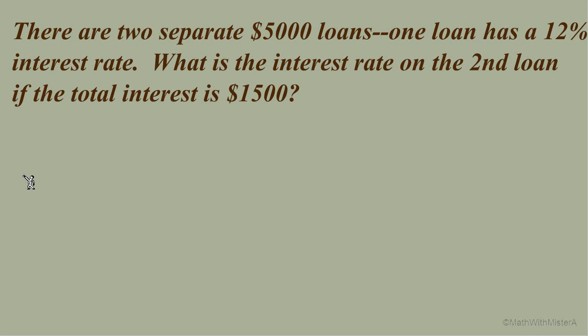Moving on to our next example. There are two separate $5,000 loans. One loan has a 12% interest rate. What is the interest rate on the second loan if the total interest is $1,500? You could pause the video and try this one. Use the same approach that we've been taking so far. Make an equation where each term is a product of the principal and interest rate for one account. So pause the video and try it. And now we'll go through the answer together.